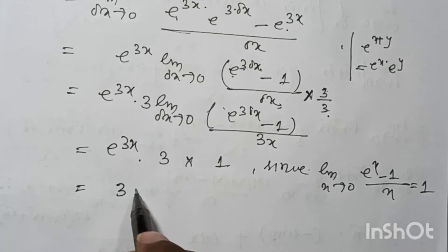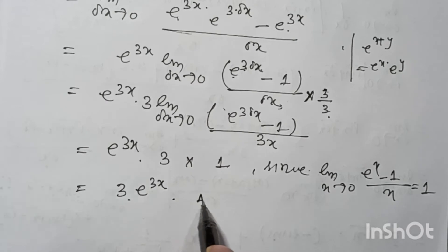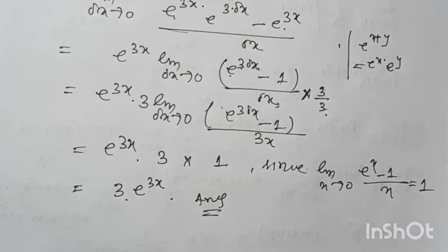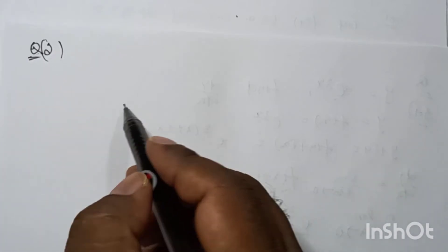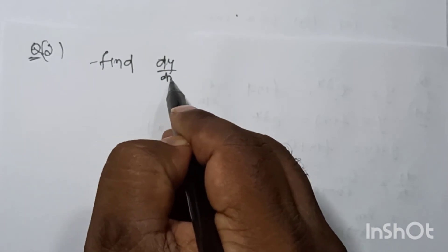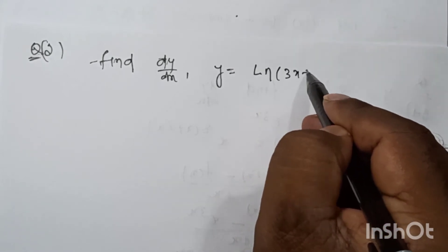Therefore we get the result: dy/dx = 3 e to the power 3x. Now question number 2: find dy/dx where y = ln(3x + 1).